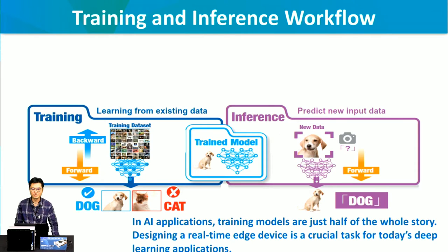Before we introduce our new product, let's go through a little bit of basic knowledge about training and inference workflow. There are two parts of the deep learning process. The first step is training — learning from existing data. The second part is inference — predicting from new input data.